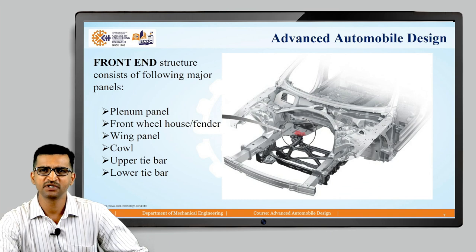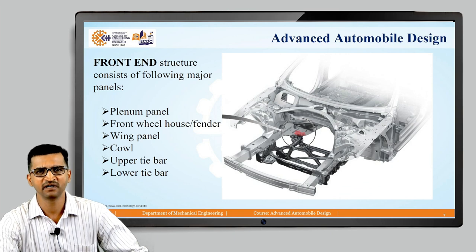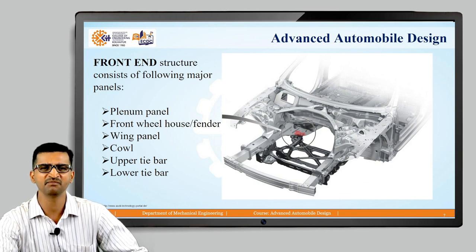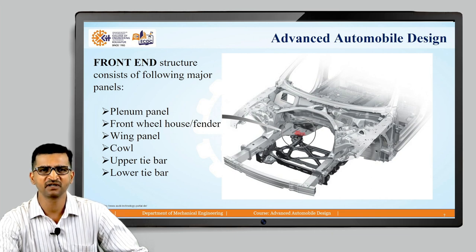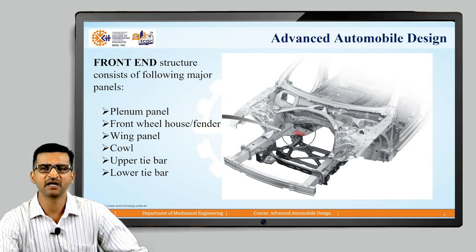This is the front end structure — the front side of the car looks like this. There is an engine which is not shown here. Components include plenum panels, front wheelhouses, wing panel, cowl, upper tie bar, and lower tie bar. The function of the tie bar is to support. The cowl is the upper portion just below the front glass. The front wheelhouse fender is the part where we provide the recess for the wheel.